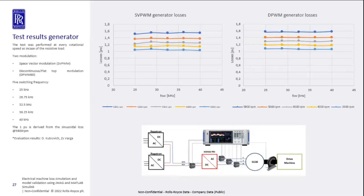As a loss measurement comparison, you can see two figures. The left side is space vector modulation and the right side is discontinuous PWM modulation — these are strictly the generator losses. We can see that the switching frequency does not really affect the losses itself, but the discontinuous PWM modulation slightly increases the electrical machine losses, especially in the magnets and in the stator.